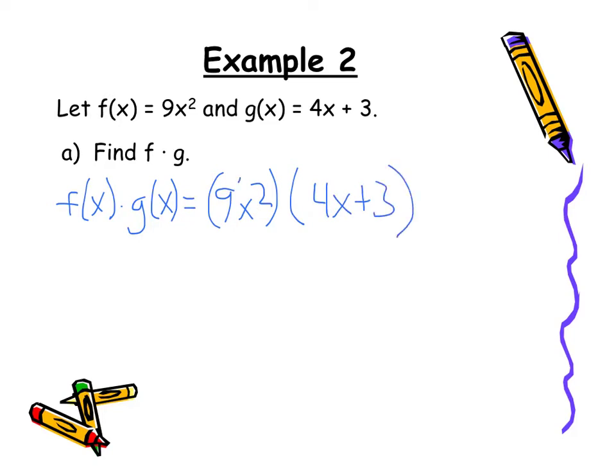When I multiply these I'm going to distribute this 9x squared to both parts. So I end up with 9 times 4 is 36. x squared times x that gives me x cubed.